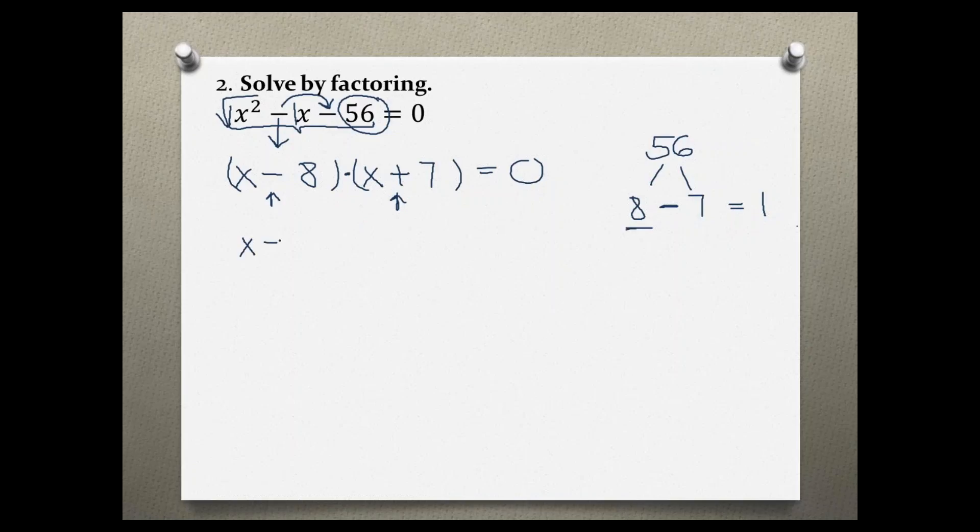Let's take each one of them and set them equal to zero. X plus 7 equals zero.